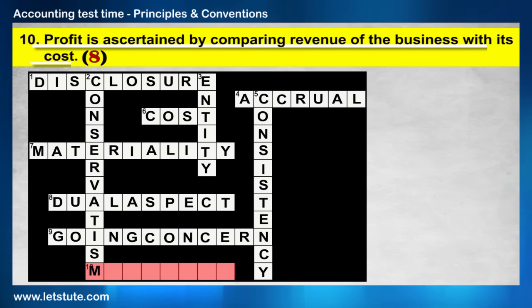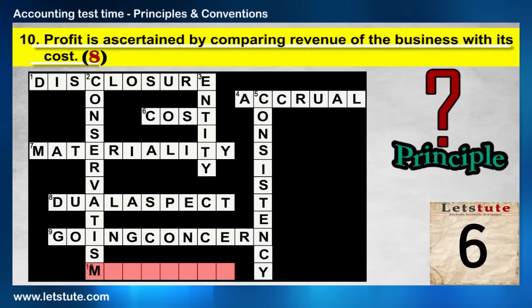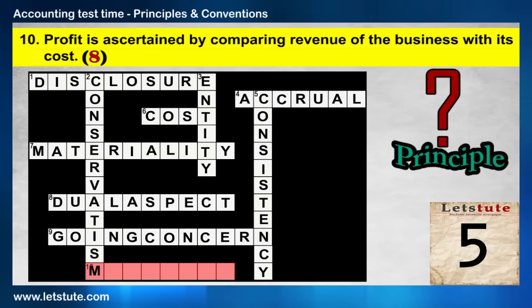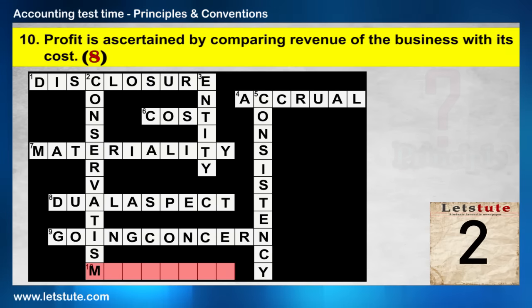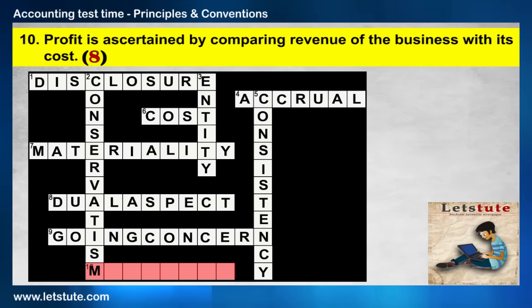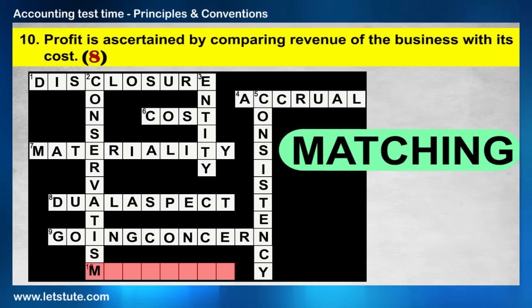And the last one: Profit is ascertained by comparing revenue of a period with its cost — guess the principle. Correct, it's the matching principle.